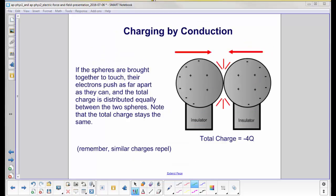The spheres are now brought together and they touch. This represents that they're touching. The electrons don't want to be near each other. They're all like charges. They're negative charges. They want to push away as far as possible.